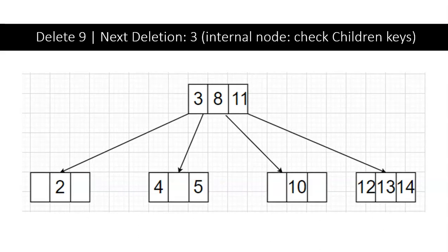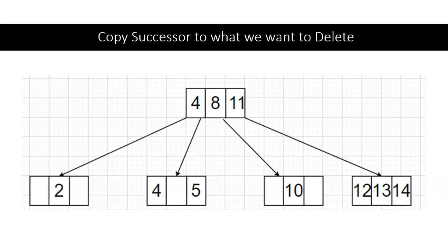Now we're going to be deleting 3. It is an internal node, so we're going to have to check its children to see if both have a single key, or at least one of them has more than one key. Since the node at 4, 5 is a 2-key node, we can just copy the successor and then delete the successor afterwards.